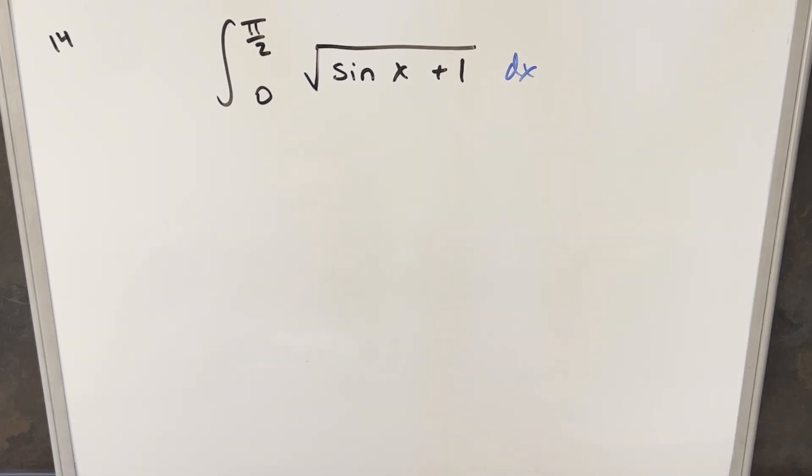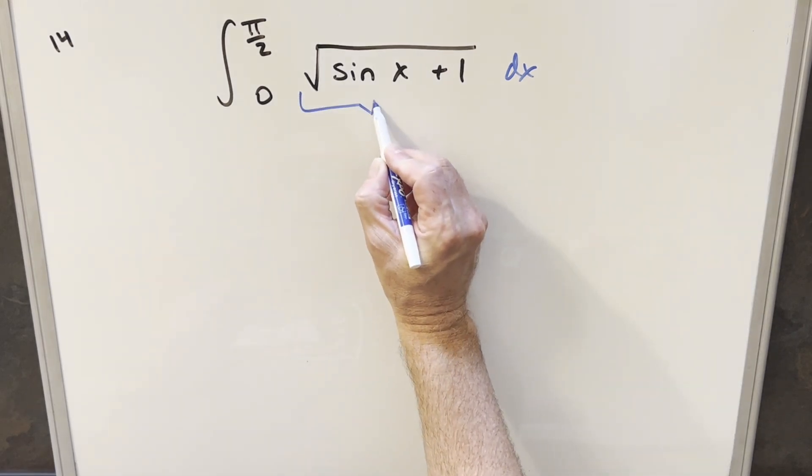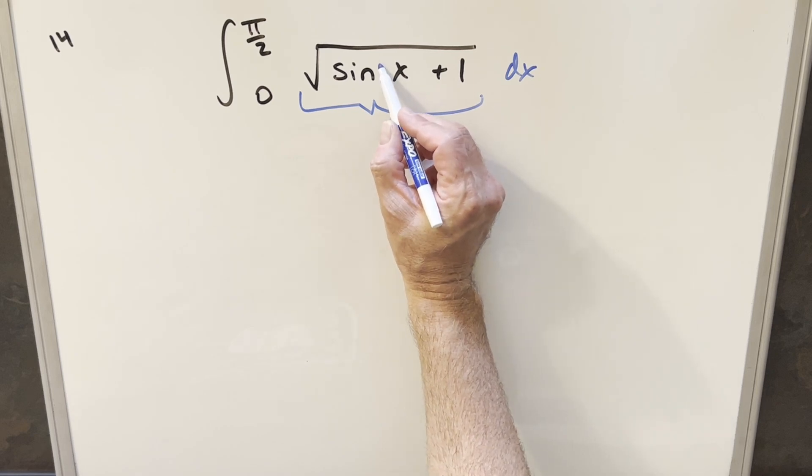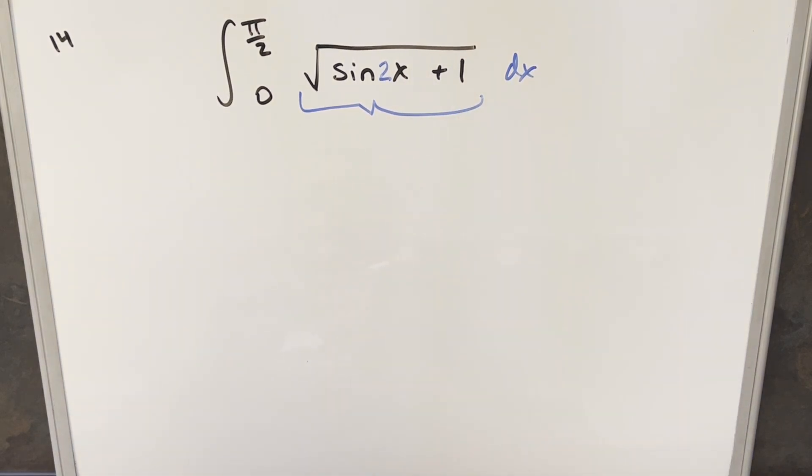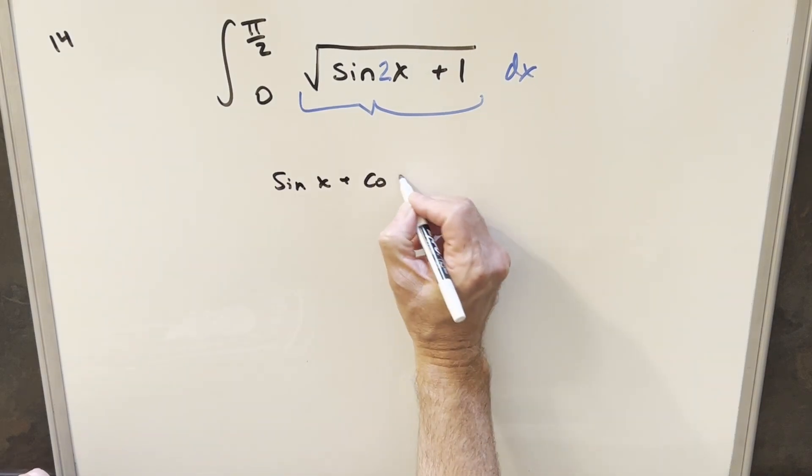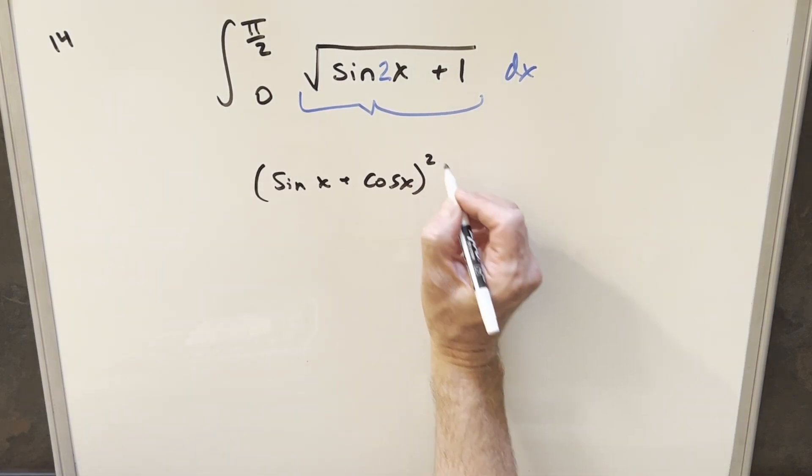The first thing I notice here is just the similarity between this and what we'll see oftentimes is an integral like sine 2x plus 1. Because if the integral was this, we have an identity for this. If you just take sine x plus cosine x and you square it,